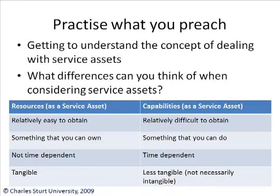Let's practice the concept of service assets. What differences can you think of between resources and capabilities as service assets? Resources are typically relatively easy to obtain, something you can own, not really time-dependent, and more or less tangible. Capabilities are more difficult to obtain, something you can do rather than own, time-dependent — it takes time to build up your skills — and they're less tangible. See if you can find some more differences between resources and capabilities.